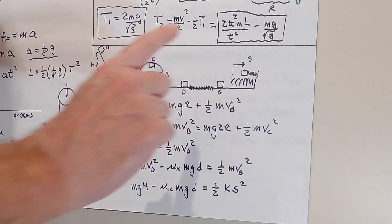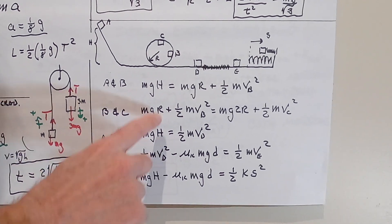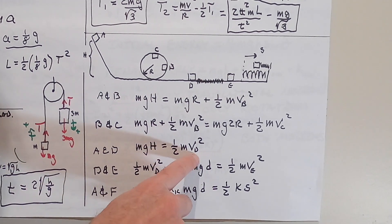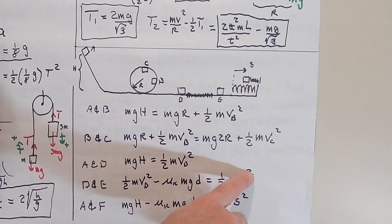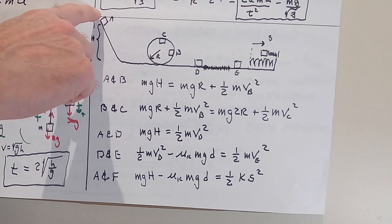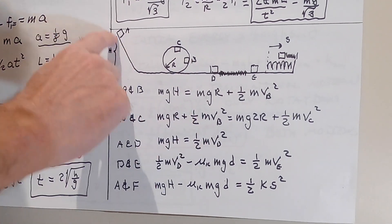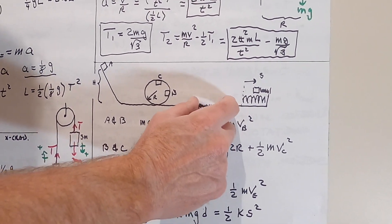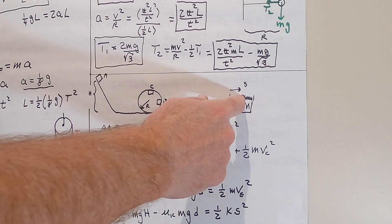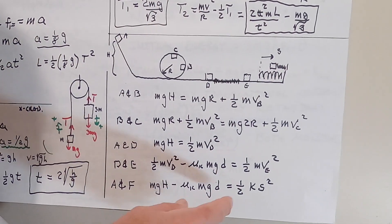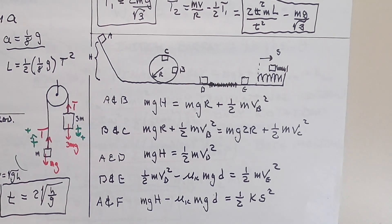Between D and E: at D the block has its kinetic energy, but it loses work due to friction, which is minus mu_k times mg times d. That equals the kinetic energy at E. Then the last one: from A all the way to F. At A you have mgh. Going through the whole path, you lose friction work in the rough section — the same term as before. At F the block is stopped at maximum spring compression, so all energy is spring potential energy: one half k s squared.